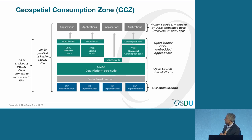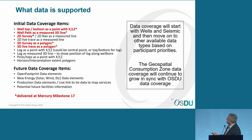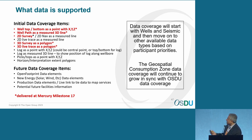Architecturally speaking, the Geospatial Consumption Zone sits at the top right under the consumption APIs area, alongside other domain APIs and the generic API — it's a layer on top of your core system. The data we've geo-spatially enabled to date includes well tops, bottoms and paths, 2D surveys, 3D surveys, and 3D live traces. The list of coverage is long, but we are slowly bringing them online.